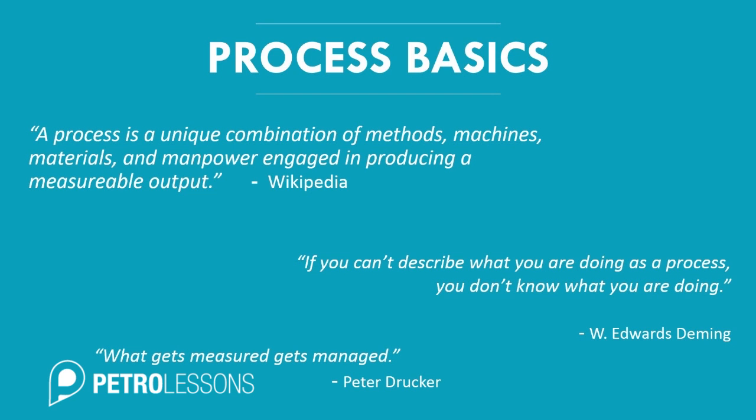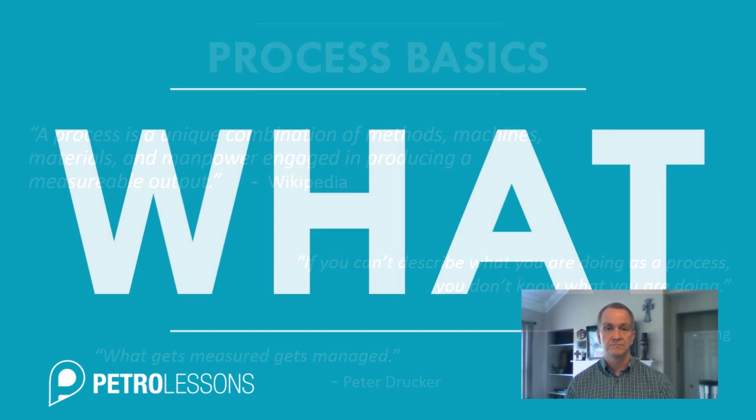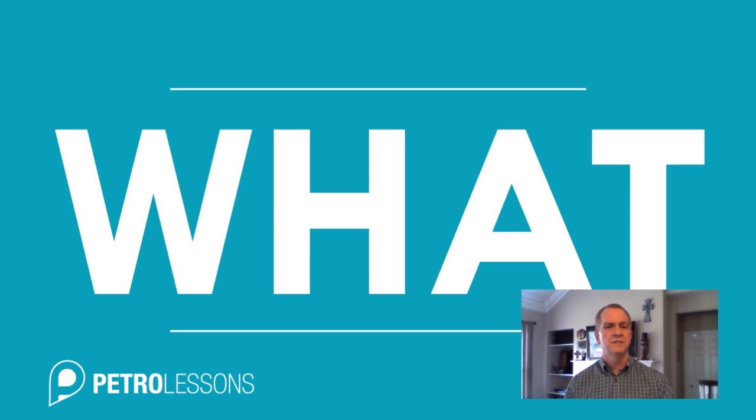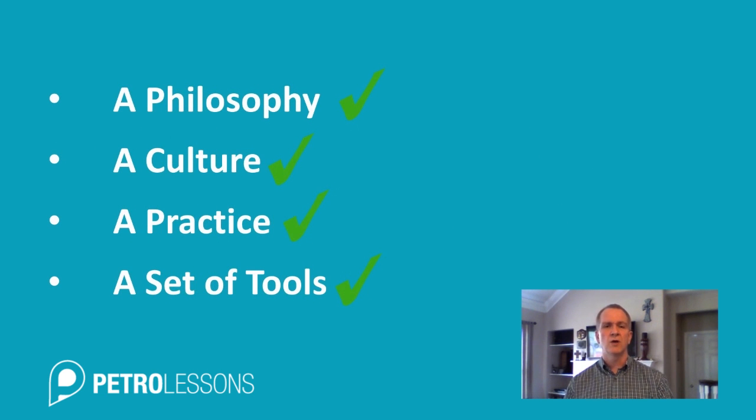Peter Drucker once said, 'What gets measured gets managed,' and that's true. If we have some kind of measurement, that measurement is what's driving people's behaviors. And that's key to lean — that you have the right key performance indicators that will drive the correct behaviors to improve your processes and to strive for process excellence. Now, what is lean? Is it a philosophy, is it a culture, a practice, a set of tools?